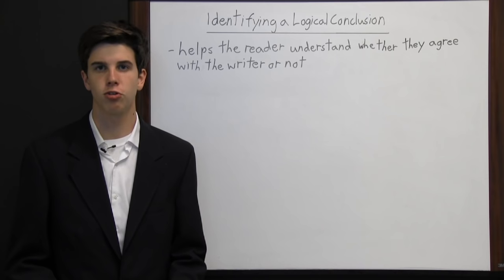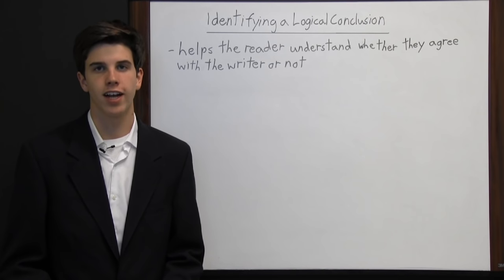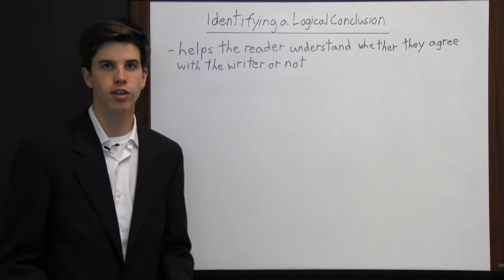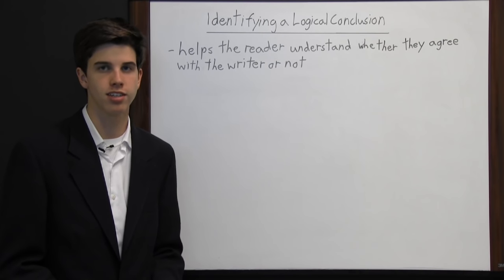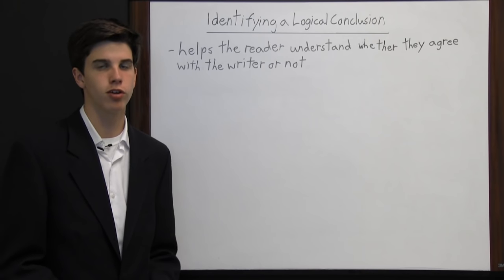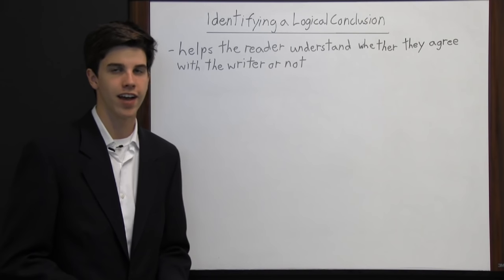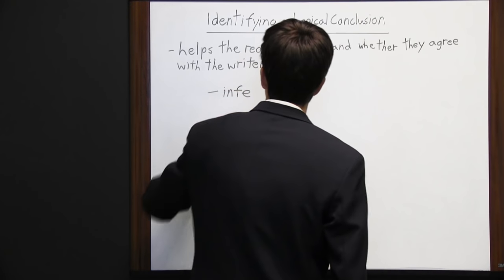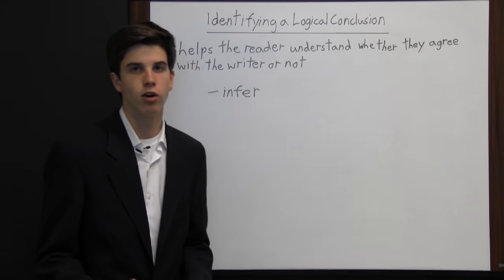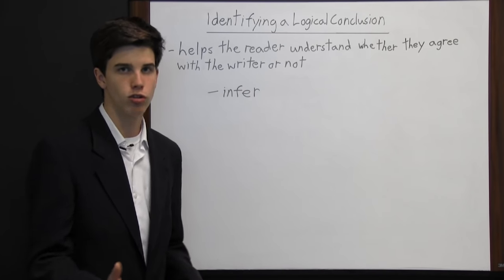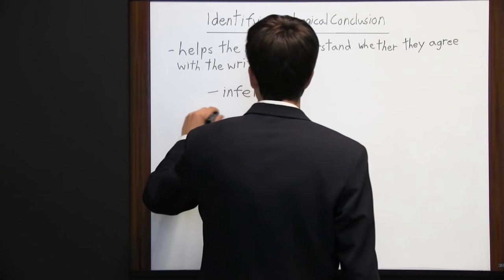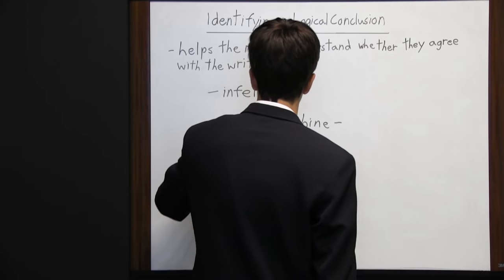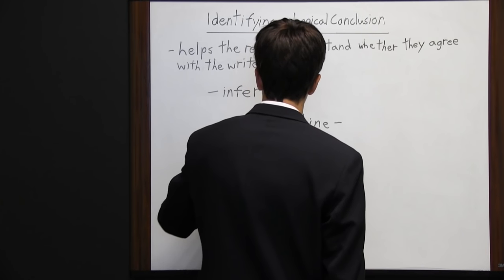Every piece of writing should have a logical conclusion, and it's your job as the reader to identify that conclusion — mainly to help you understand whether you agree with the writer or not. You don't want to just read a piece of literature; you want to analyze it. To identify the conclusion, you're going to need to make an inference. To infer something means to take what you already know and combine it with something else to draw a conclusion.